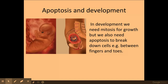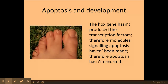That's what we use apoptosis for in development. This is an example of where apoptosis hasn't quite worked out. The main reason behind this is that the Hox gene hasn't produced enough, or any, or the right transcription factors. Therefore any molecules that are signaling apoptosis haven't been made, and apoptosis hasn't occurred — so there is still some webbing in between these toes, as you can see.